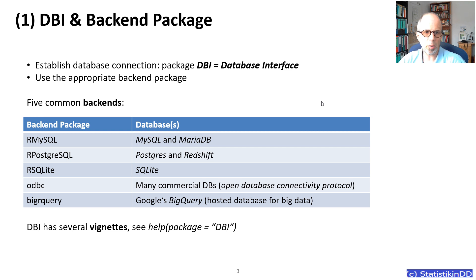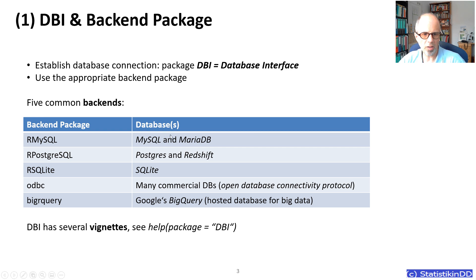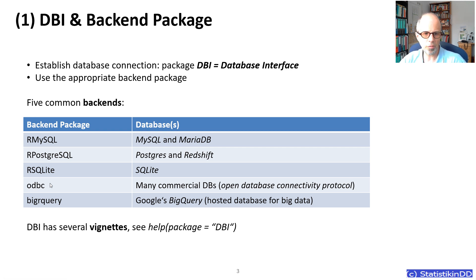The first approach is the DBI package and the backend package. DBI is used to establish a database connection — DBI stands for database interface — and then we need one additional package that relates to the backend. The most common ones are r-mysql, r-postgreSQL, r-sqlite, odbc, and bigrquery. If your specific database is not in there, you have a good chance of connecting using the odbc package, which implements the open database connectivity protocol. The DBI package is quite well documented, so you might want to check out the vignettes.